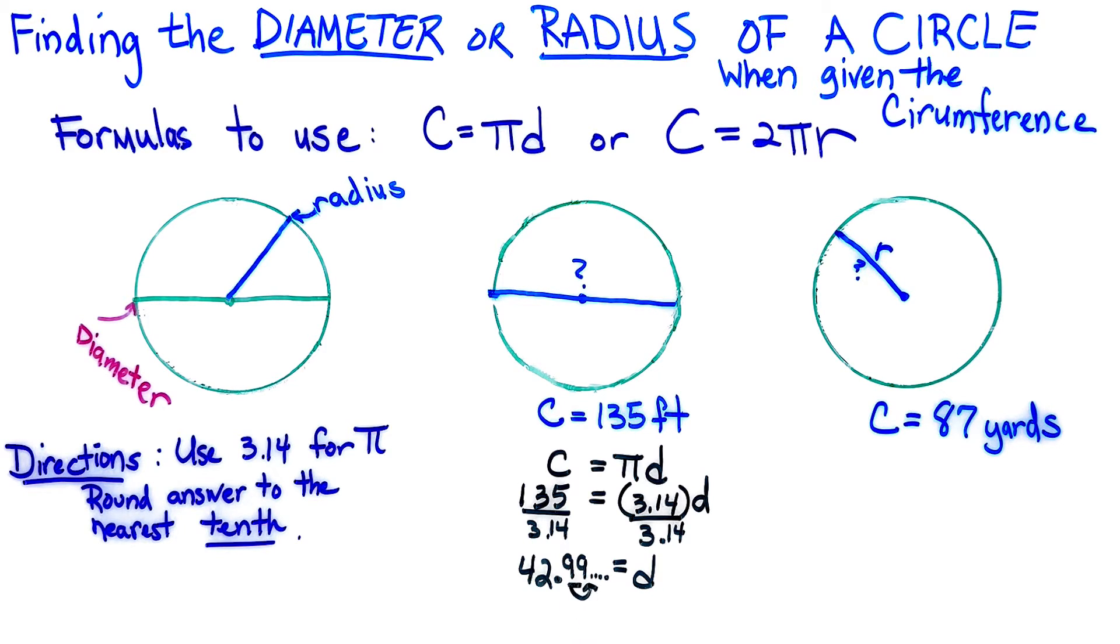I'm looking at my hundredths place, and since there is a nine there, I know that my diameter is going to be equal to, I need to round up, to 43. And it is in feet. And there's your answer.